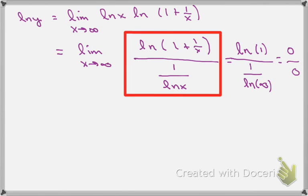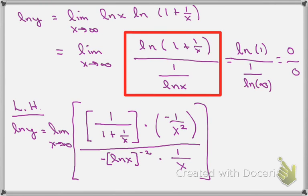Now it's just a matter of taking our time and doing a good job with the derivatives. The derivative of the numerator, ln(1 + 1/x), gives 1/(1 + 1/x) by the chain rule, times the derivative of the inside, which is −1/x². For the denominator, 1/ln x is ln x to the minus 1, so its derivative is −(ln x)^(−2) times 1/x. That's the derivative of the top divided by the derivative of the bottom.